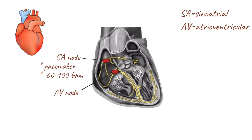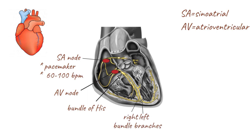At the AV node, the impulse is briefly slowed before continuing down the conduction pathway to the Bundle of His. The Bundle of His divides into the left and right bundle branches and finally into the Purkinje fibers, which in turn stimulate ventricular contraction.